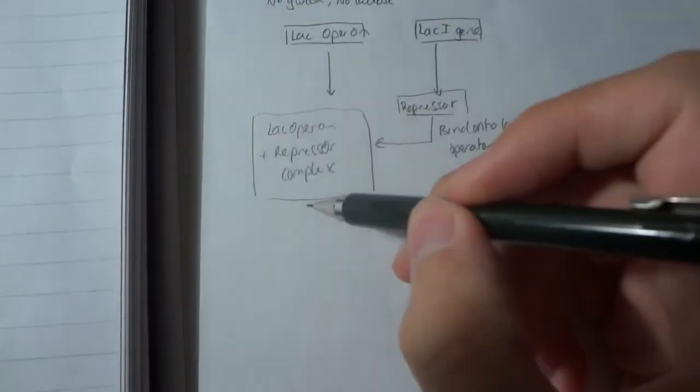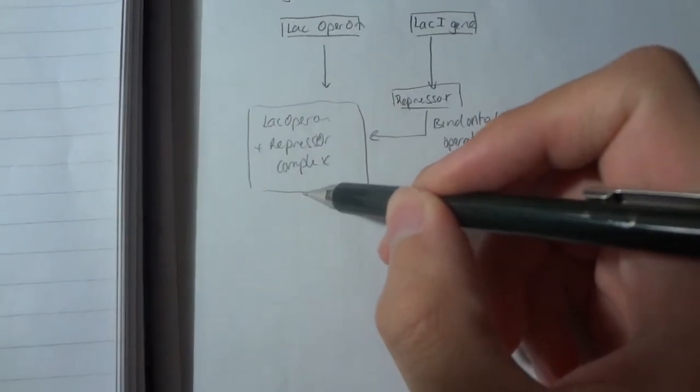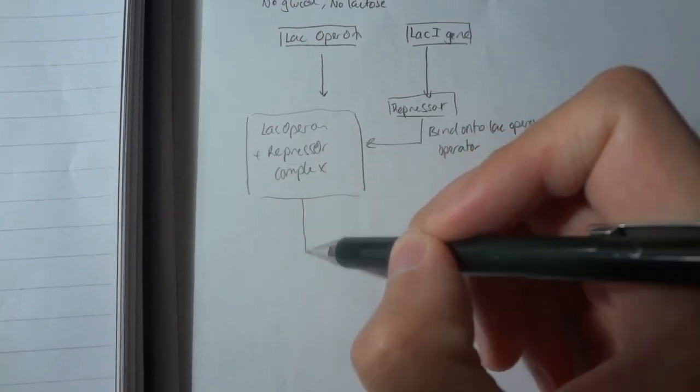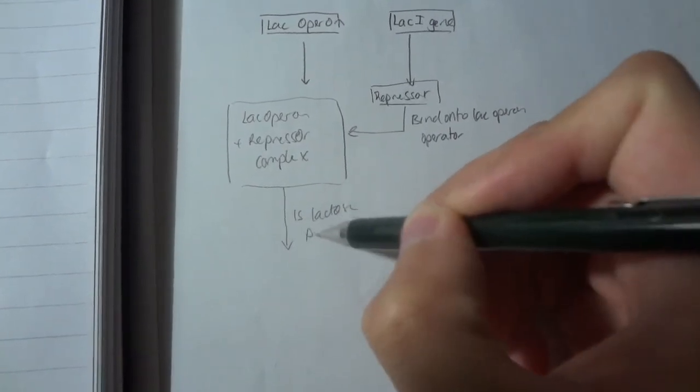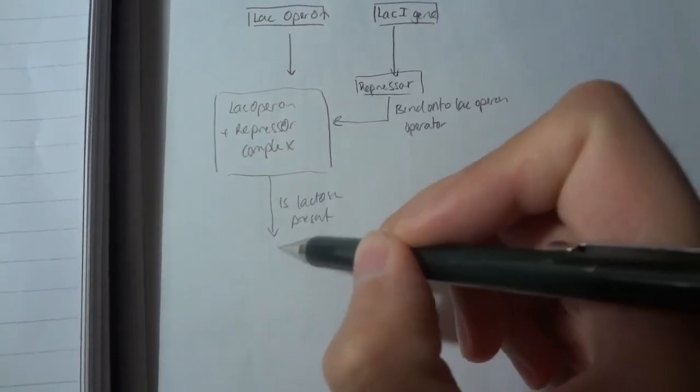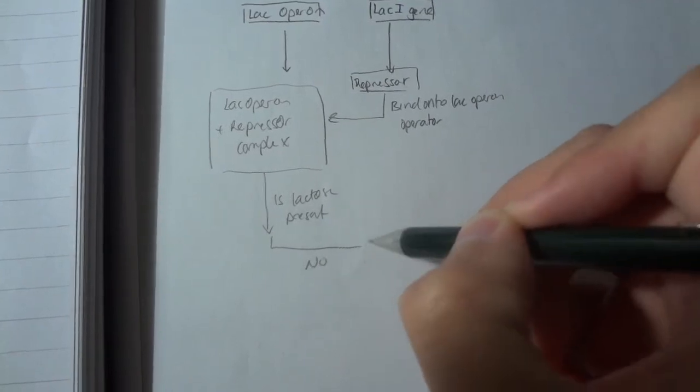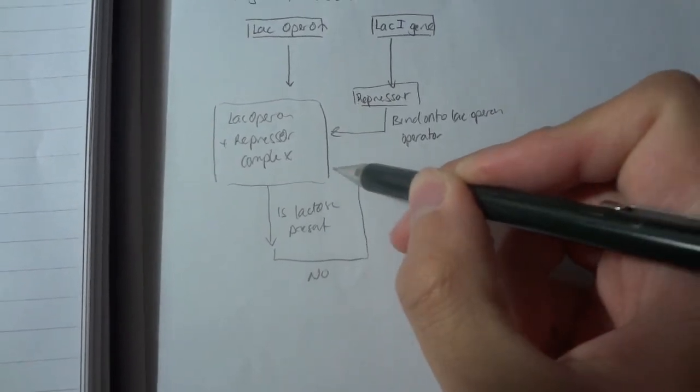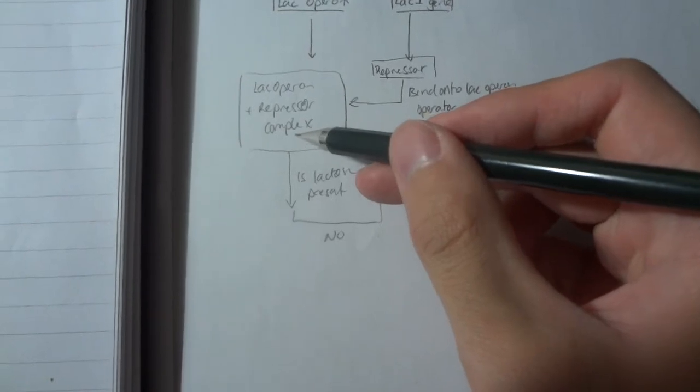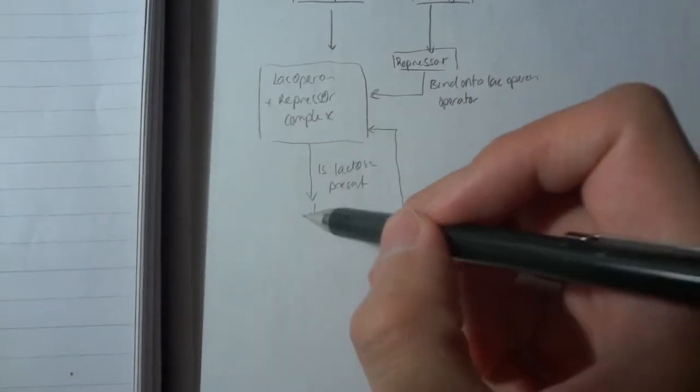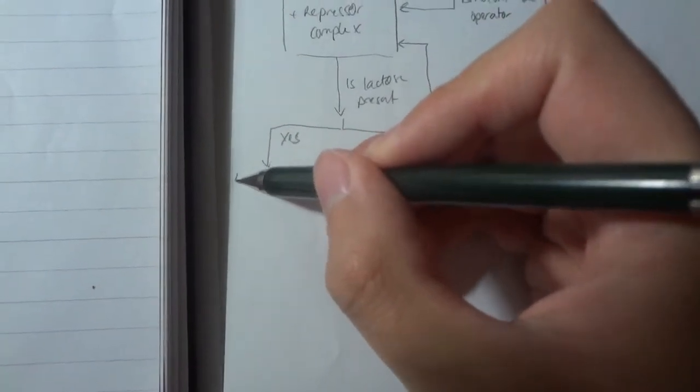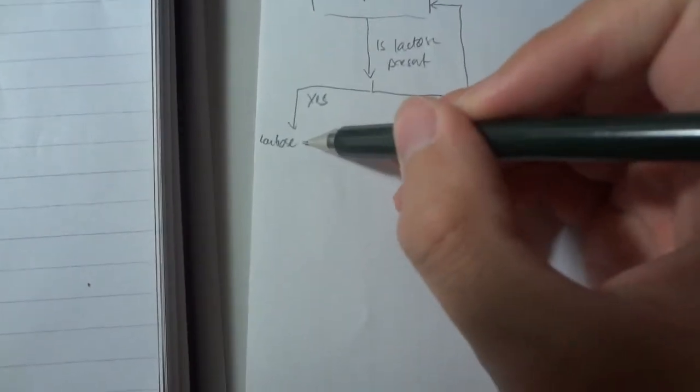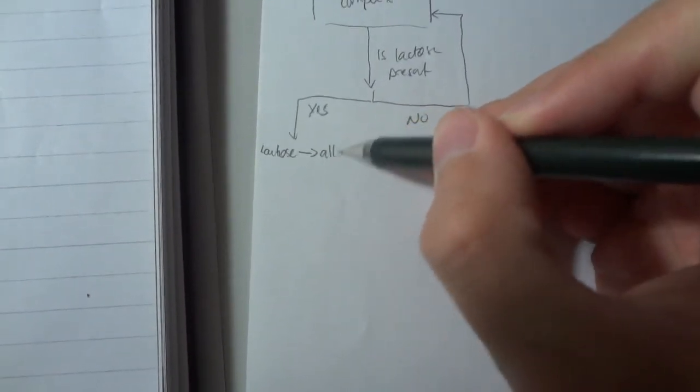So let's make an if statement here. So is lactose present? If the answer is no, then we just keep the same state. The repressor doesn't detach. But if we do have lactose, then lactose in the cell turns into allolactose.